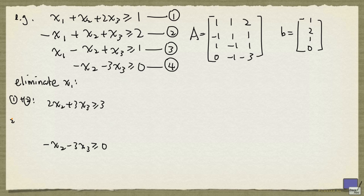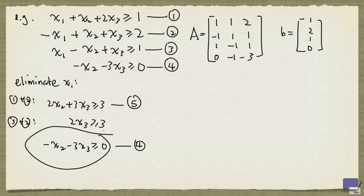And then the last pair is 3 and 2, adding them will give us 2x3 greater than or equal to 3. And we continue labeling these new inequalities. So this one here is the same as 4, and the new inequalities will be given labels 5 and 6.